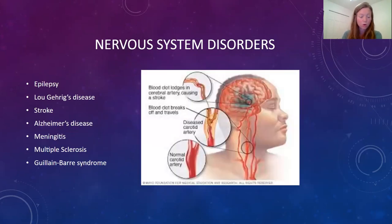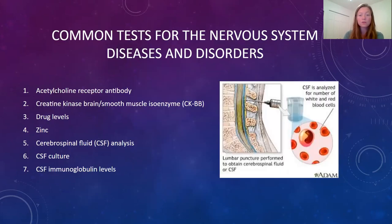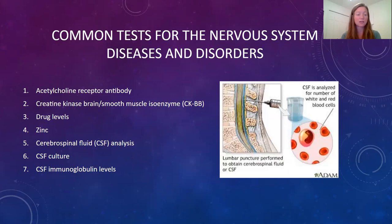Some common nervous system disorders include a CVA or stroke, Alzheimer's disease, meningitis, or multiple sclerosis. There are many tests that can help diagnose diseases and disorders of the nervous system, and you'll find that on table 5-7, page 101 in your textbook. This is going to help you diagnose things like meningitis, cancer, and encephalitis — which is swelling of the brain.